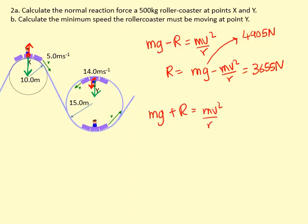So here if we make R the subject, you get Mv squared over R minus Mg. And you get 1628 Newtons.